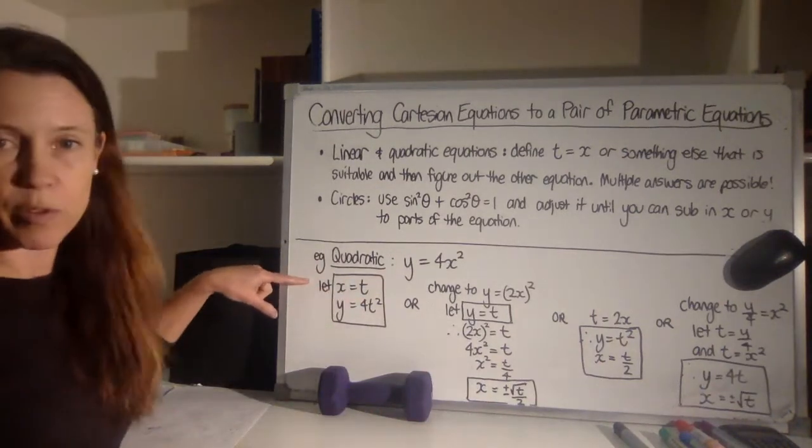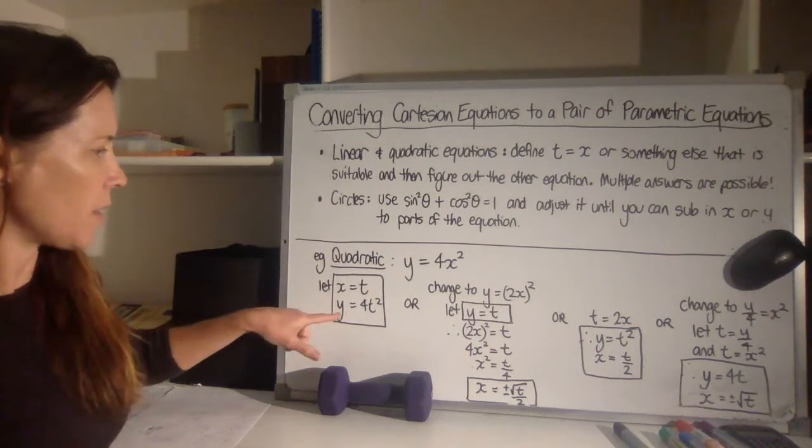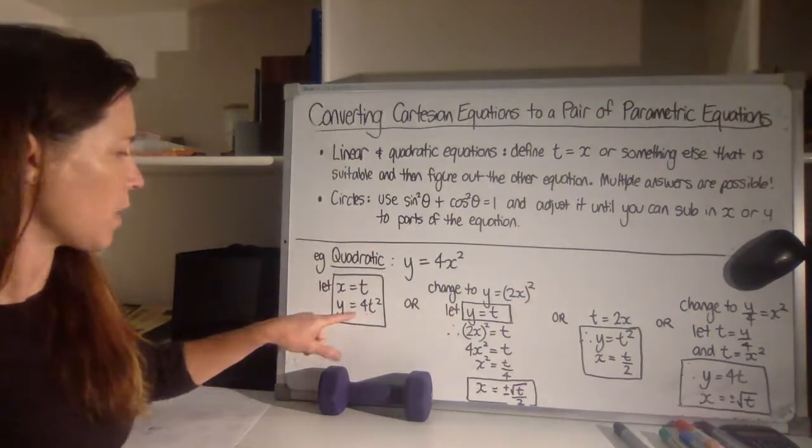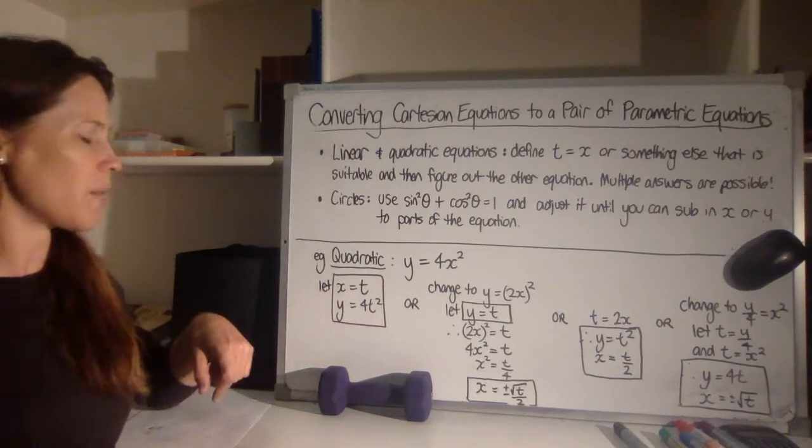So the most straightforward way to do it is just to say, let's let x equal t, and so then I've just subbed in t for x here and said that y equals 4t squared. That's perfectly acceptable. You can stop there and do it that way every time if you like.